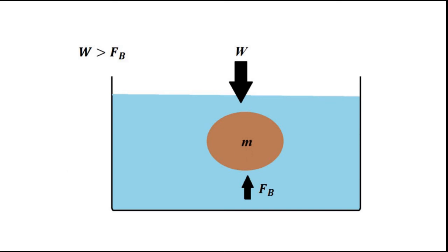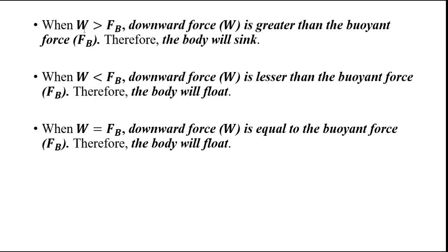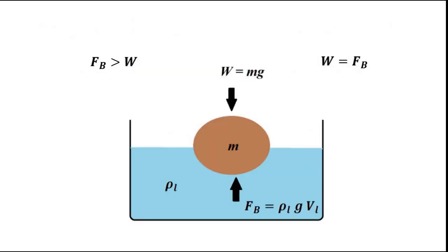The second condition: when the buoyant force is greater than the weight — that is, the upward force exceeds the downward force — the object will float. The third condition: when the weight is exactly equal to the buoyant force, the object will also float. So when the weight is greater than the buoyant force, the body sinks. When the weight is less than or equal to the buoyant force, the body floats.